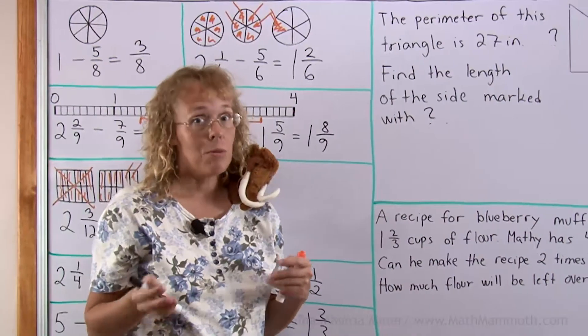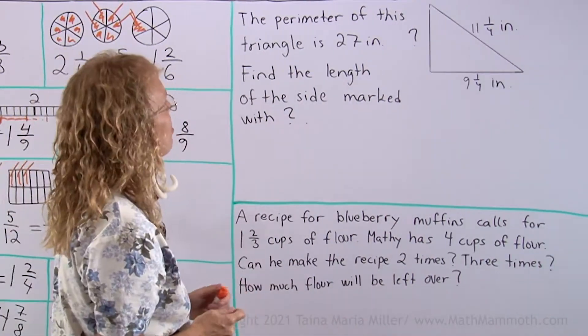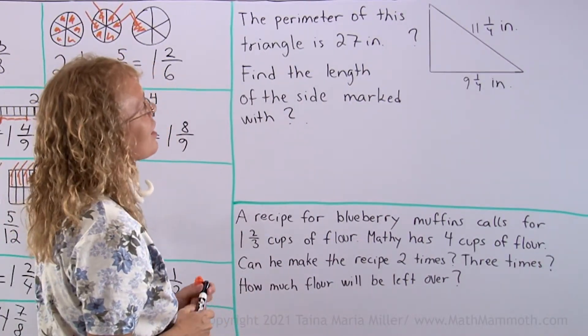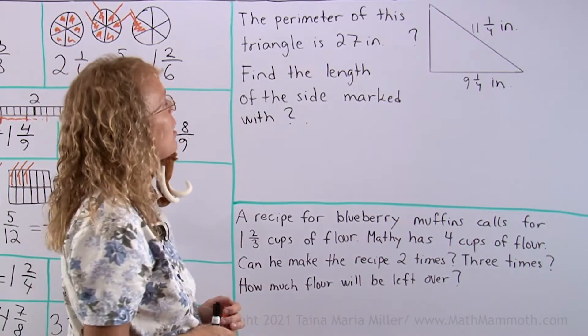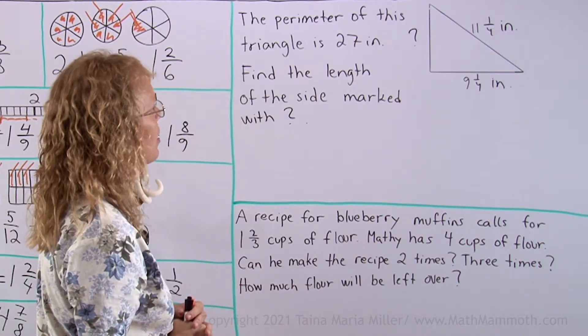Lastly, let us solve some word problems. The perimeter of this triangle is 27 inches. Find the length of the side marked with question mark.